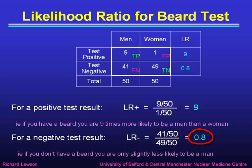0.8 is rather close to 1. So if you don't have a beard — a negative test result — you're only slightly less likely to be a man, 0.8 times as likely. A likelihood ratio of 0.8 doesn't change things very much, but the likelihood ratio for a positive test result of 9 changed things quite significantly. So a large likelihood ratio is useful, and one close to 1 is not very useful.